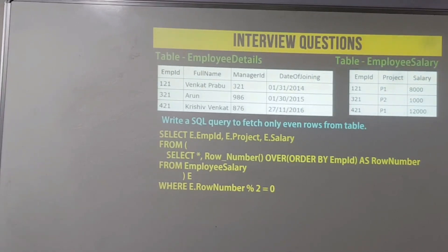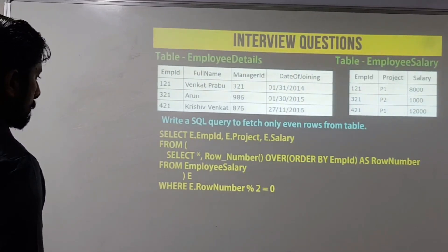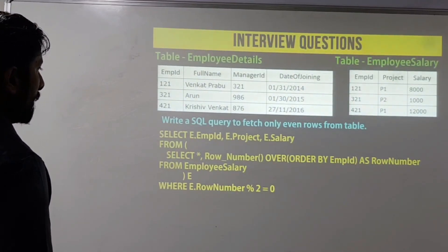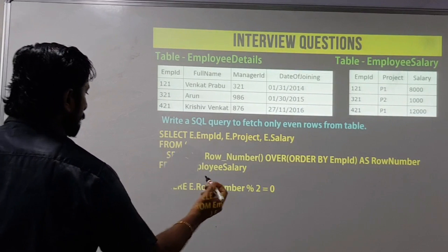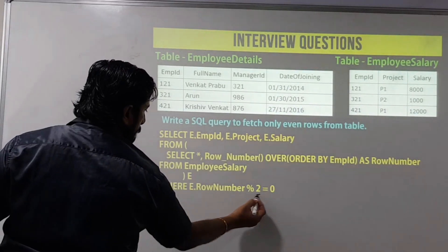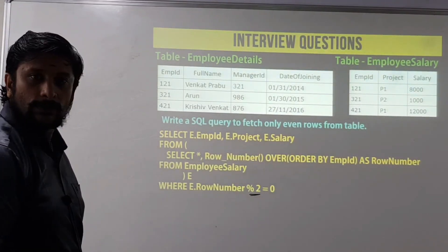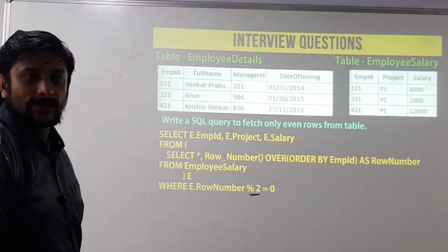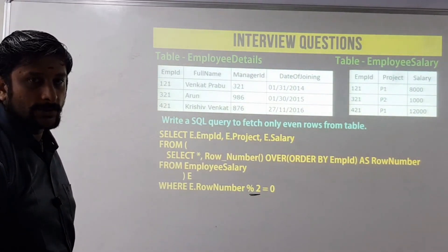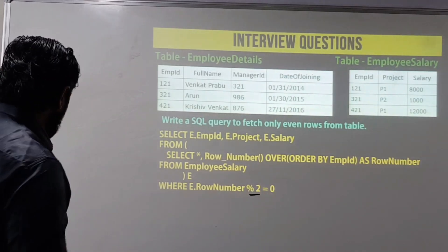Write a SQL query to fetch only even rows. Simply change the condition from the previous query: WHERE row_num % 2 = 0. That's all that needs to change.